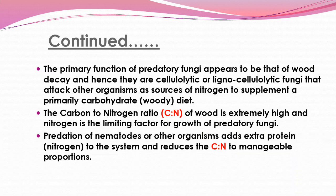The primary function of predatory fungi appears to be that of wood decay, and hence they use other organisms as a source of nitrogen to supplement their primary carbohydrate diet. The carbon to nitrogen ratio of wood is extremely high and nitrogen is the limiting factor for growth of predatory fungi. Predation of nematodes or other organisms adds extra protein nitrogen to the system and reduces the carbon-to-nitrogen ratio to manageable levels, helping to maintain the carbon and nitrogen proportion in the soil.